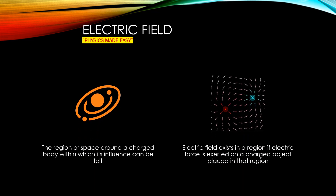Electric field is the region or space around a charged body within which its influence can be felt, or we can say that electric field exists in a region if an electric force is exerted on a charged body placed in that region.